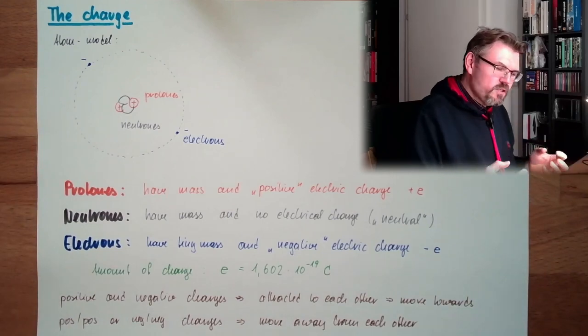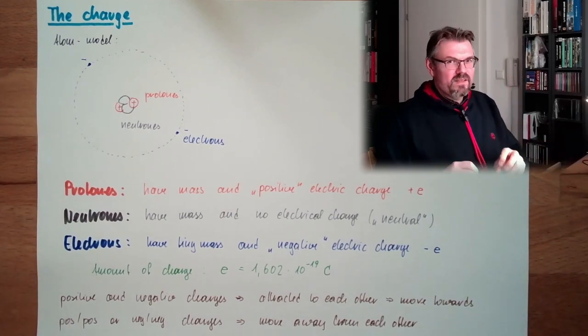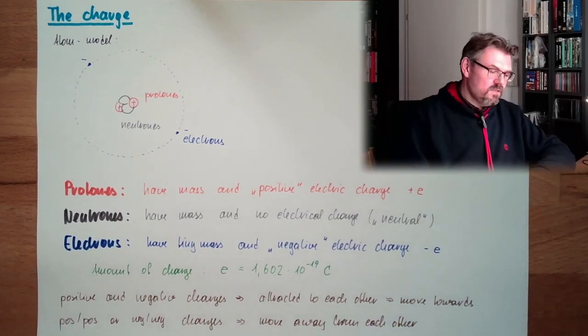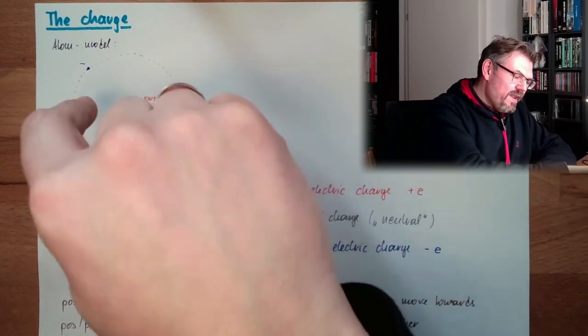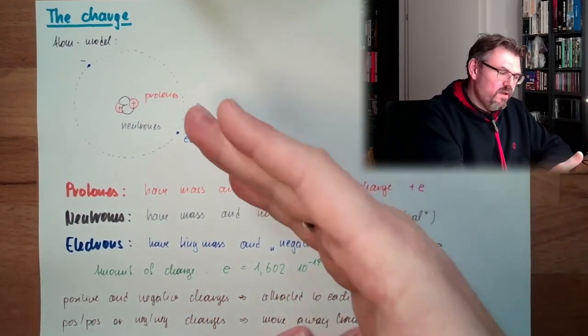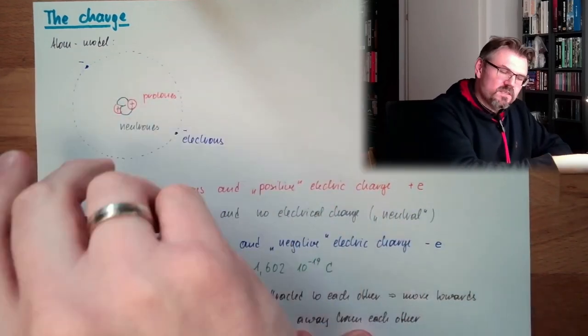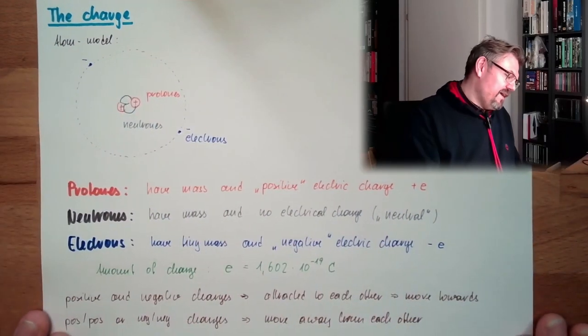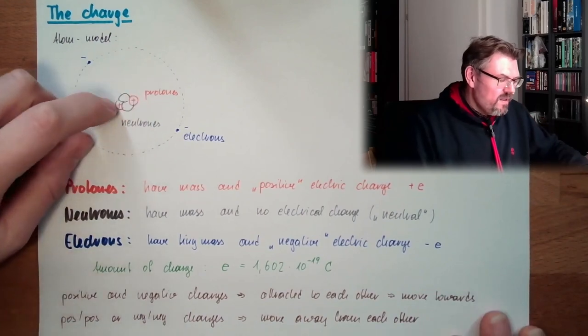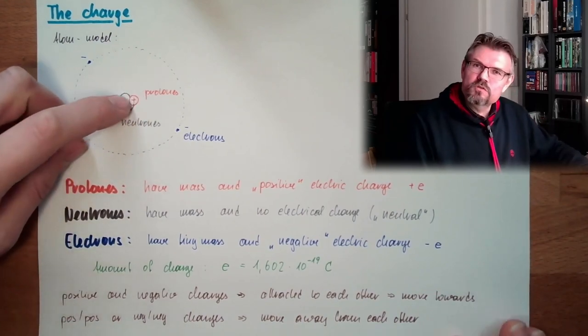This is why usually electrons are never on the same side of an atom, on the opposite side. This is how you can think it. And how are two protons so close together?